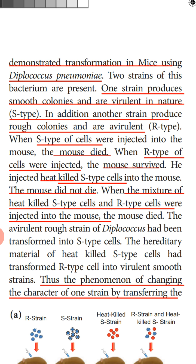In the fourth condition, a mixture of heat-killed S-type cells and live R-type cells was injected into the mouse. The R-type cells had no heat treatment applied. This mixture was injected into the mouse, and the mouse died. From this, Griffith concluded that the avirulent rough strain of Diplococcus had been transformed into S-type cells.